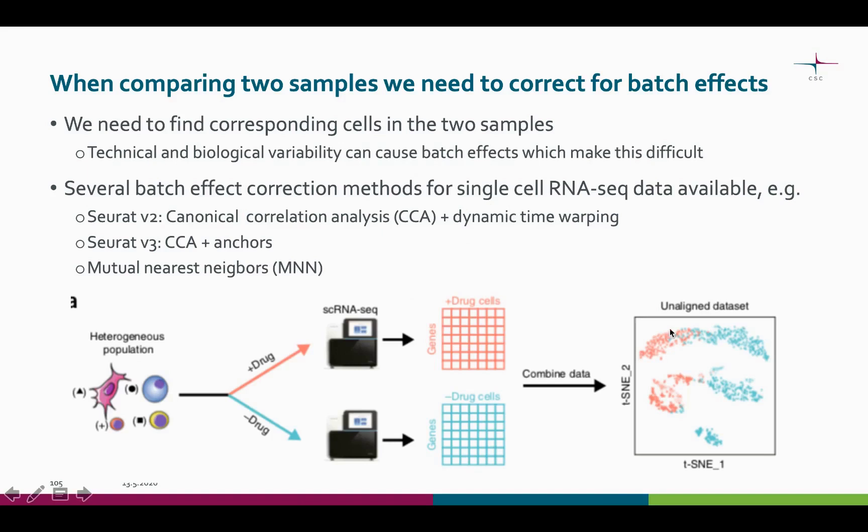Now that we are comparing two samples, we have yet again more variability to take into account. We need to correct the batch effect between the two samples, or otherwise we won't be able to find the corresponding cells in the two samples. There are several methods for correcting the batch effect, and this has been a quickly developing area.